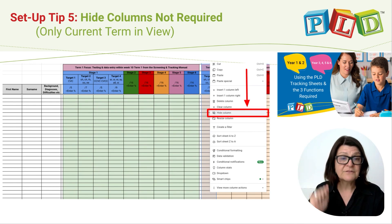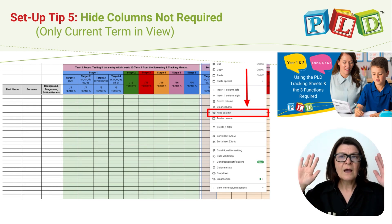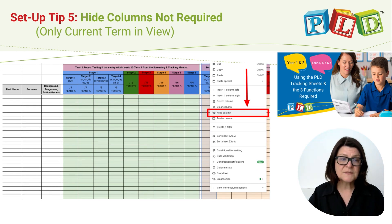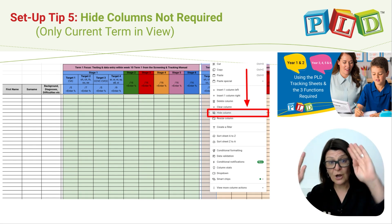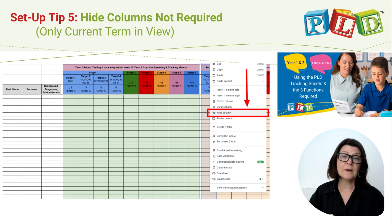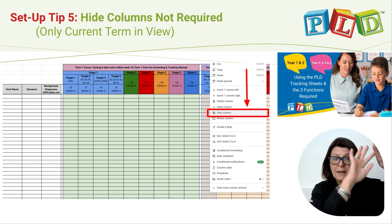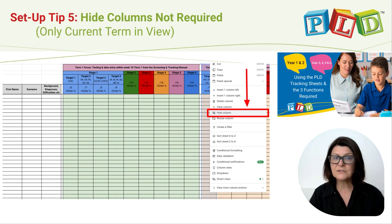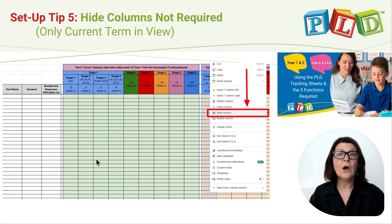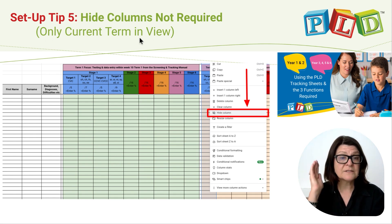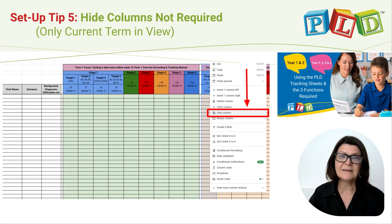Tip five: hide the columns that are not required. For example, in term three, hide term one, term two, and term four, and have only term three in view. Only have the current term visible and hide the others.